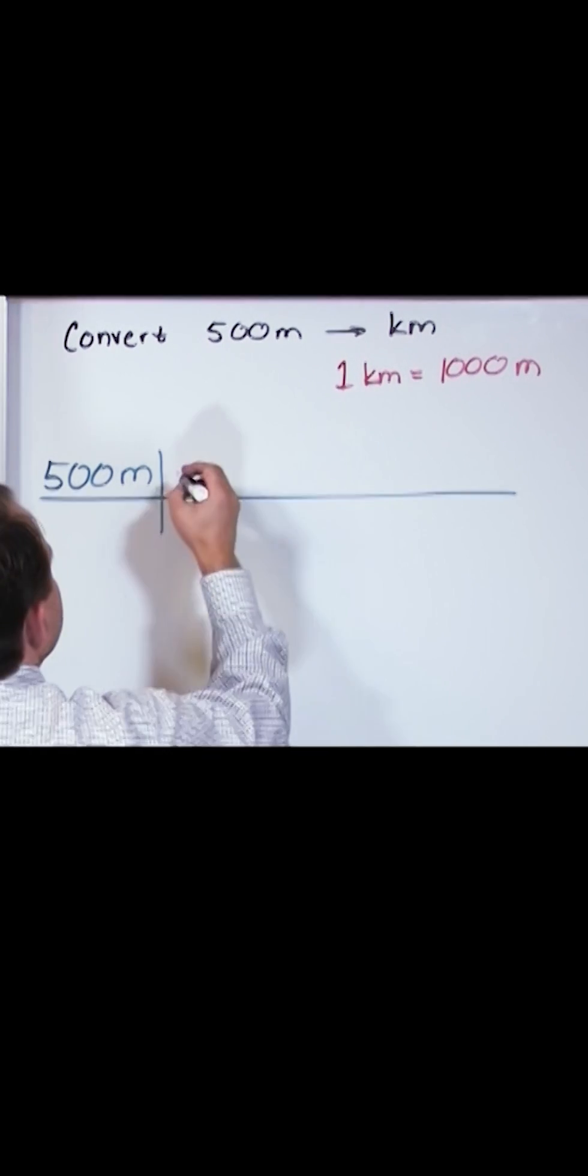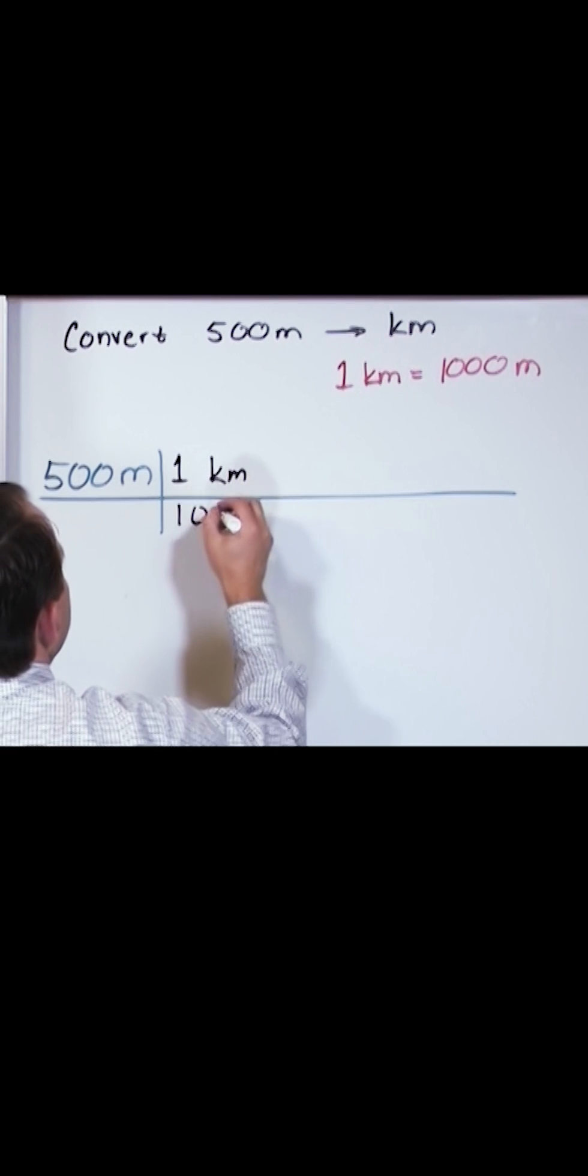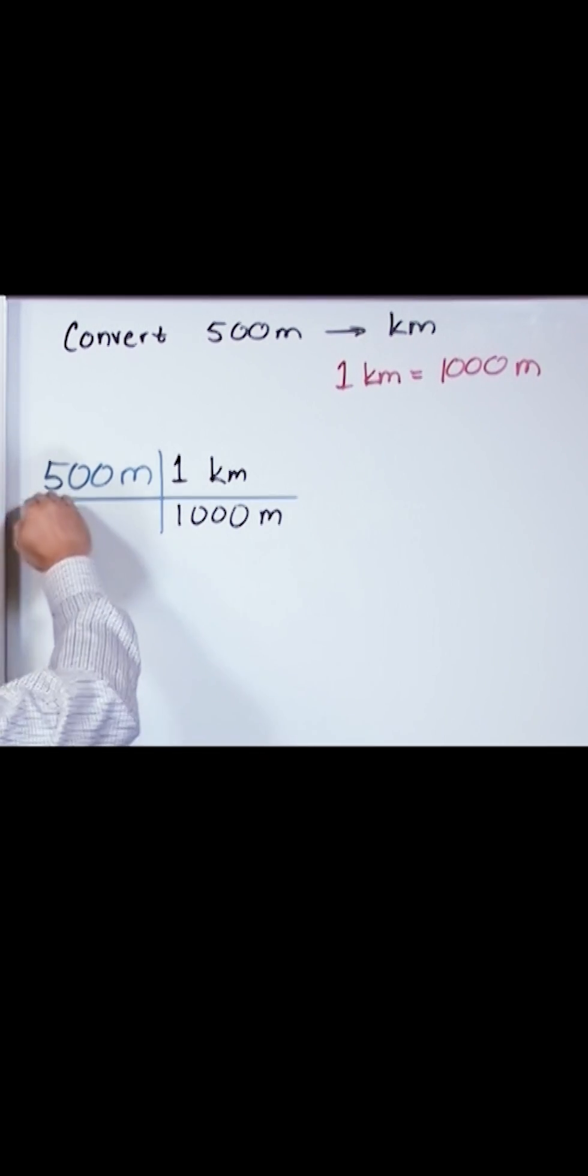So what we want to do is write it like this: one kilometer equals 1,000 meters. This is like a fraction bar.